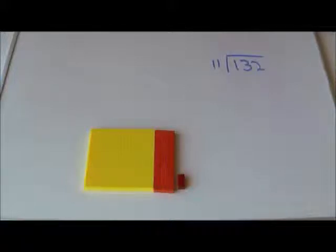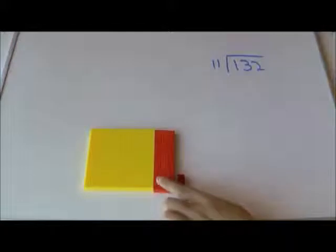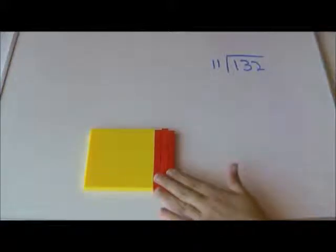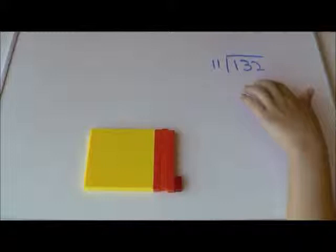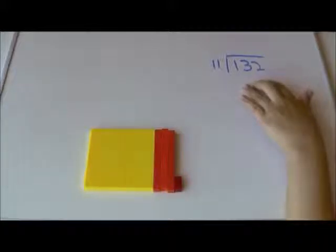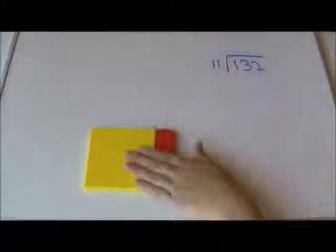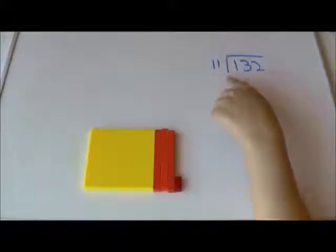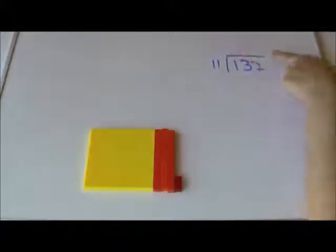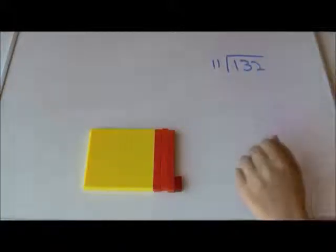So, this first one, 132 divided by 11. So we have 132 and we want to know how many 11s are in 132, or I want to make a rectangle out of 132 and I want 11 on one side and I want to know what the other side is.